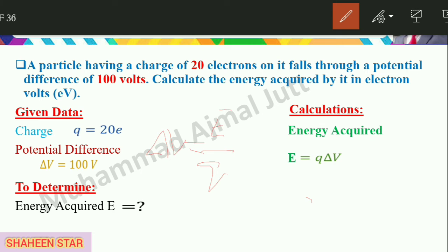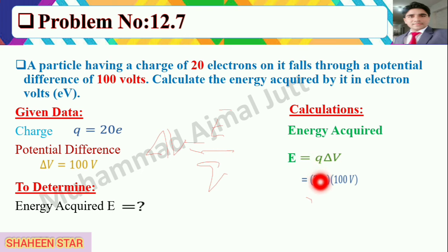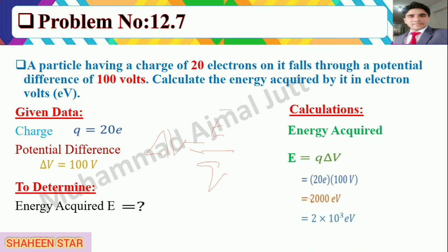This is a simple method. Q can be given and delta V can be given. Putting in the values: Q is equal to 20 electrons and delta V is equal to 100 volts. If you multiply them, you get an answer of 2000 electron volts, which you can write in scientific notation as 2 cross 10 to the power of 3 electron volts.